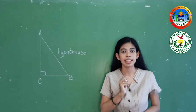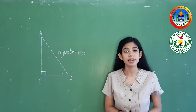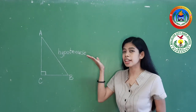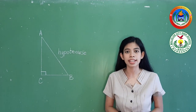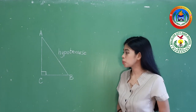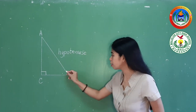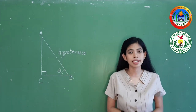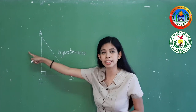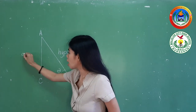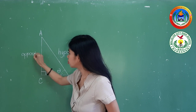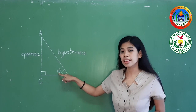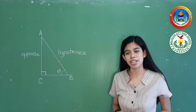While the opposite side and the adjacent side depend on the location of angle theta. Angle theta is a Greek symbol which denotes an angle. Suppose angle theta is located at angle B. We can say that the opposite side is the side opposite angle theta, so this could be our opposite side.